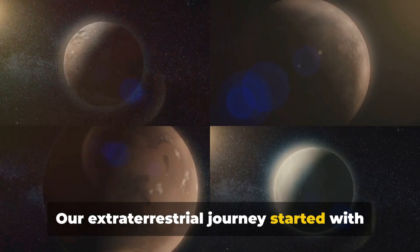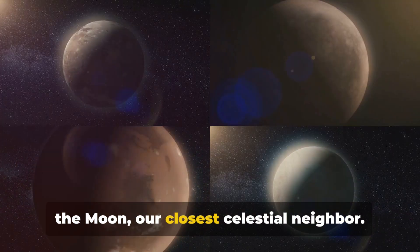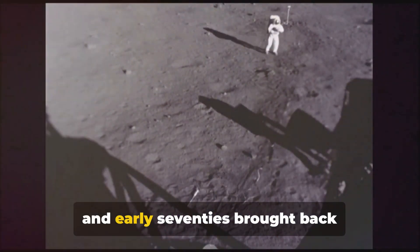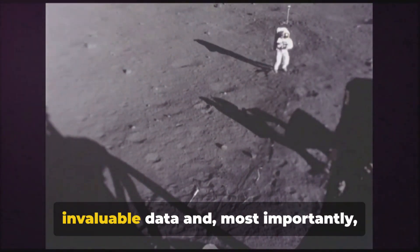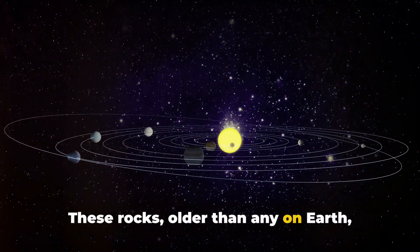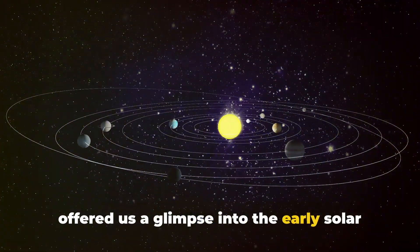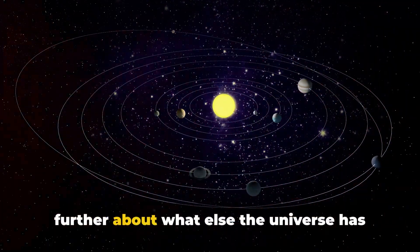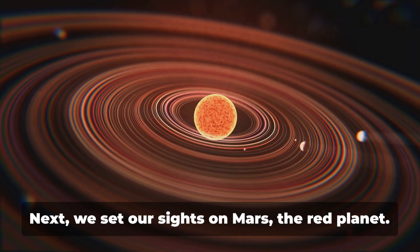As we began to reach for the planets in our solar system and beyond, our extraterrestrial journey started with the Moon, our closest celestial neighbor. The Apollo missions of the late 60s and early 70s brought back invaluable data, and most importantly, lunar rocks. These rocks, older than any on Earth, offered us a glimpse into the early solar system's formation, sparking our curiosity further about what else the universe has in store.